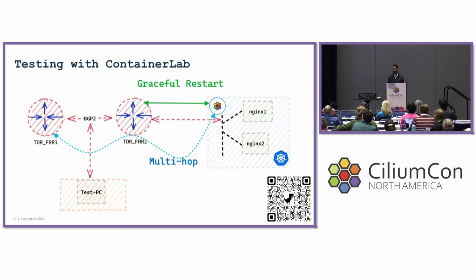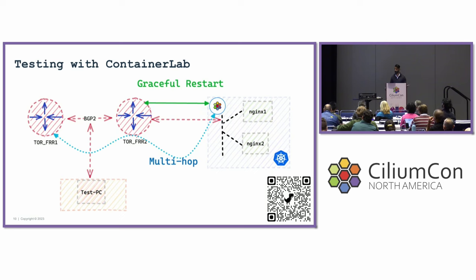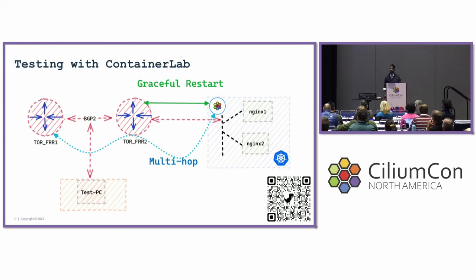In ContainerLab, you can bridge to a live Kubernetes environment running Cilium and also stand up virtual routers of various types. I'm using the Free Range Router (FRR). You could use Bird, Vyatta, Cisco IOS — there's a whole bunch of virtual appliances. Go to containerlab.dev to check them out.